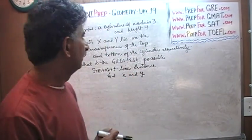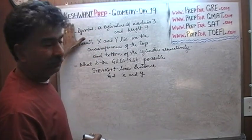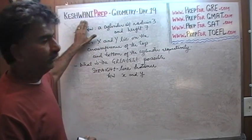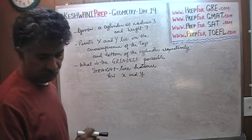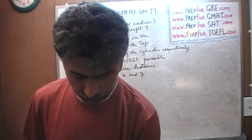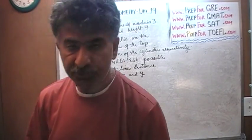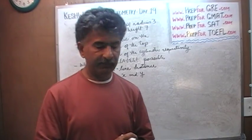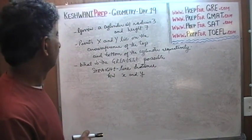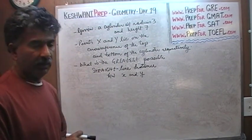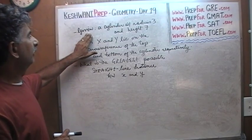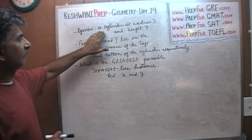Hello, my name is Keshwani, K-E-S-H-W-A-N-I. We are here because we want to improve our geometry skills. Today is day number 19, lesson number 19. The problem is on the blackboard. I'm going to read it to you. We're given a cylinder with a radius of 3 and a height of 7.